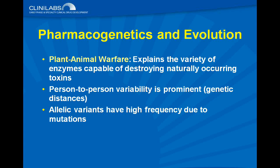Person-to-person variability in pharmacogenetics involves genetic distances. Whether you study evolution or creationism, at some point human beings were genetically very similar. But over many generations and centuries, we started to see genetic distance due to mutations and allelic variants. Allelic variants have a high frequency due to mutations. Over the course of human existence, we've gone from having essentially the same DNA to having a lot of variability in our DNA — and that's what makes us all individual.